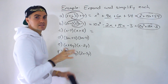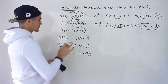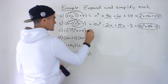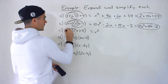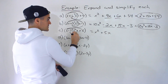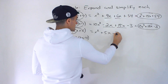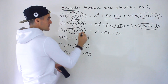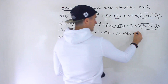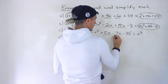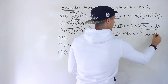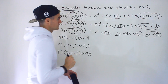Next, part c: (x − 7)(x + 5). Again we have a negative, so be careful with the signs. x times x gives us x squared. x times positive 5 gives us positive 5x. Negative 7 times x gives us minus 7x. Negative 7 times positive 5 gives us negative 35. Netting out 5x minus 7x gives us minus 2x, so the answer is x squared − 2x − 35.